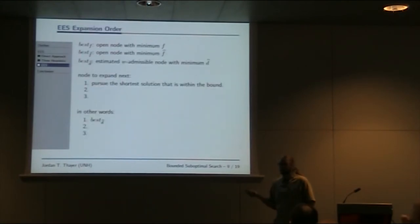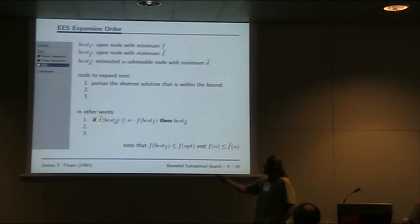I'd like to tell you the expansion order of EES is to consistently expand best D-hat and pursue the shortest solution within the bound. Unfortunately, this is a bounded suboptimal algorithm, so we have proving to do. We can't just expand best D-hat. We only expand best D-hat if the estimated cost of the solution through that node can be shown to be within a factor W of a lower bound of the cost of the optimal solution. We only pursue that solution if we can show right now it's within the desired bound.